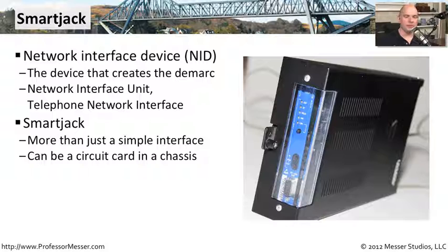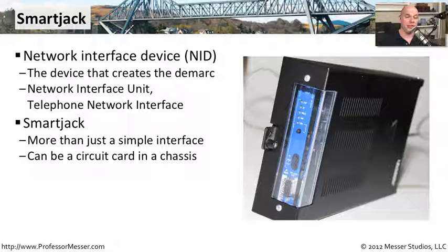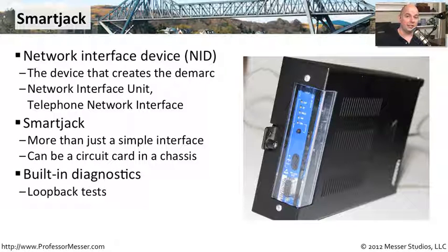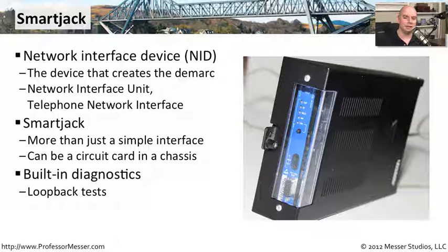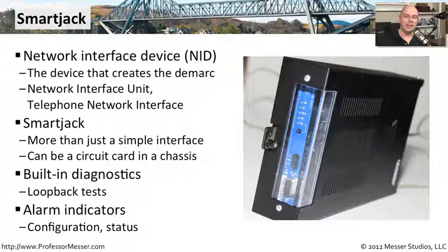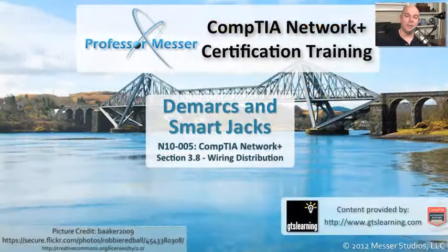The smart jack is more than just a simple box. Inside of this device is usually a circuit card with a chassis around it. The smart jack is put there for your wide area network provider so that they can check on the status of that connection. The advantage is that you can call your wide area network provider and they can remotely run diagnostics — sending signals down to the smart jack, looping back connections, and checking for problems. There are also alarm indicators, sensors, and configuration details built in, so in many cases it makes sense to put in a smart jack rather than a dumb box, because it allows them to provide a much higher quality of service.